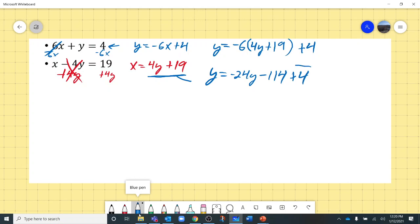And then we have plus 4. We can combine these two. Negative 114 plus 4. Be careful. We do have a minus sign right there. So negative 24y. Negative 114 plus 4. Remember, if you're on a number line, you're way down here at negative 114. You're adding 4. That means you're going to go to the right, 4 places. And when you come back down, that's negative 110. So minus 110. Equals y.